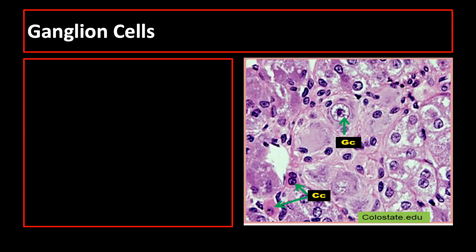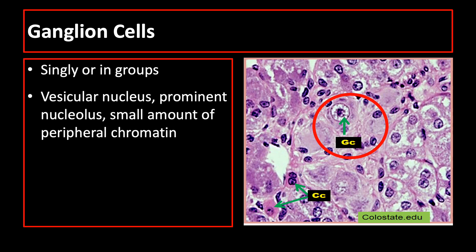Another cell type in the adrenal medulla is the ganglion cell, which appears singly or in groups and has a vesicular nucleus, prominent nucleolus, and small amount of peripheral chromatin.